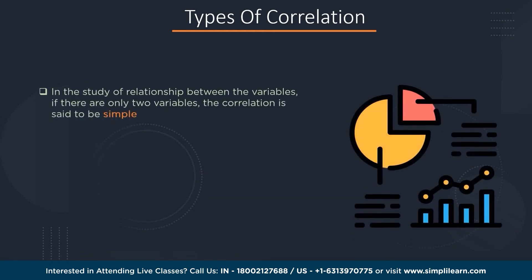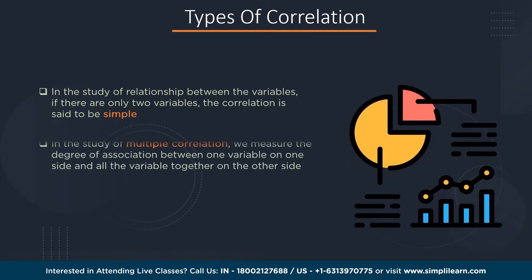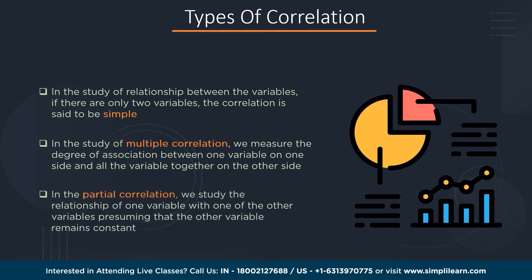Now let's discuss simple, multiple, and partial correlation. When only two variables are involved, the correlation is said to be simple. In multiple correlation, we measure the degree of association between one variable on one side and all the other variables together on the other side. For partial correlation, we study the relationship of one variable with one other variable, presuming that all remaining variables remain constant.